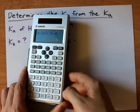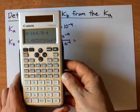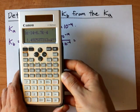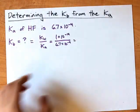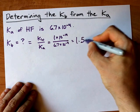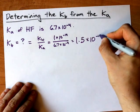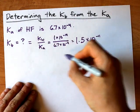Now, this calculator will also give me scientific notation as an answer, and it's 1.5 times 10 to the negative 11. And that's it. That is the KB of F minus.